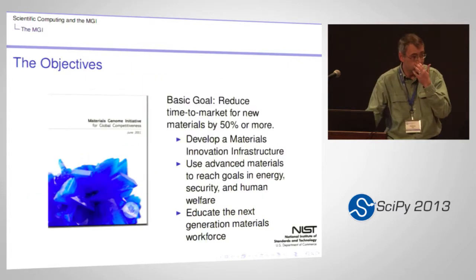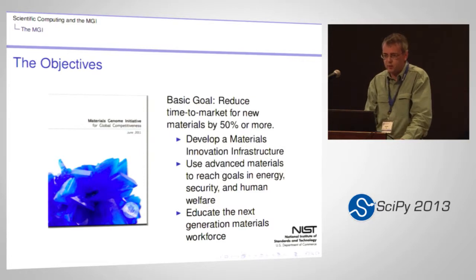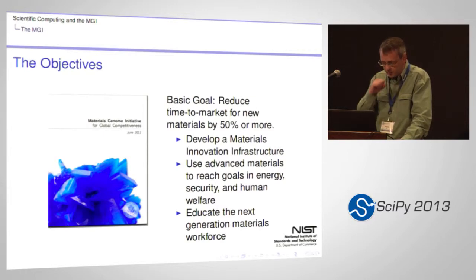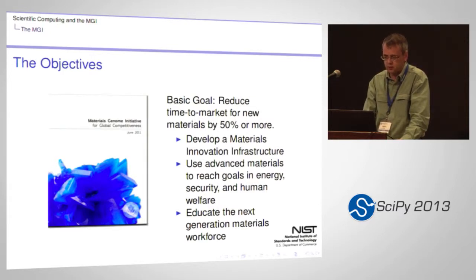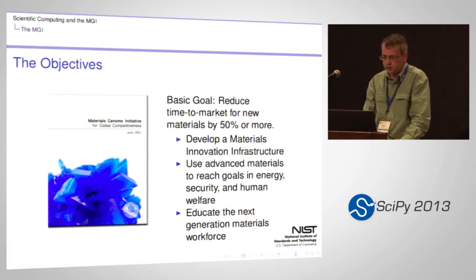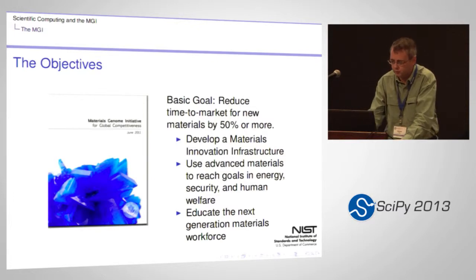The basic goal, as articulated by the president, is to reduce the time to market for new materials by 50% or more. There are a couple of other sub-goals the government has been tasked with: developing a materials innovation infrastructure — and I'll describe what that actually means beyond the buzzwords — and serving national policy goals including using advanced materials to reach goals in energy, security, and human welfare. There's also an educational component: the hope is that in academia this will be used as an educational tool to bring the next generation materials workforce up to speed.